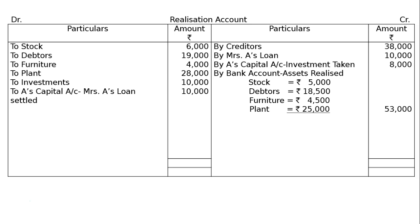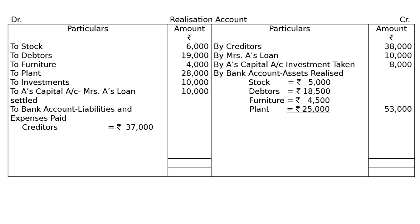Then, Liabilities Paid and Expenses. Liabilities and Expenses Paid: Creditors Rs.37,000 in full settlement, and Expenses amounted to Rs.16,000. The total is Rs.38,600 — wait, Rs.53,000 on one side and payments of Rs.38,600 on the other.